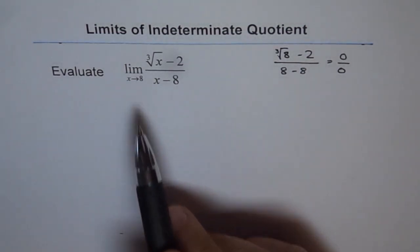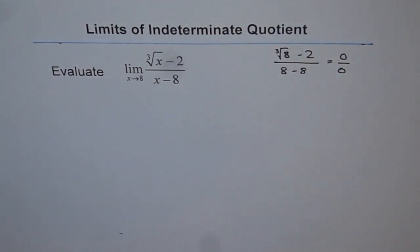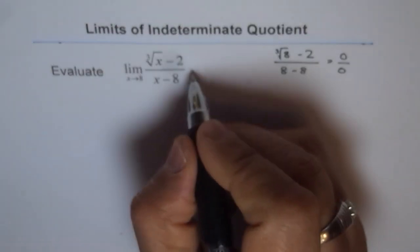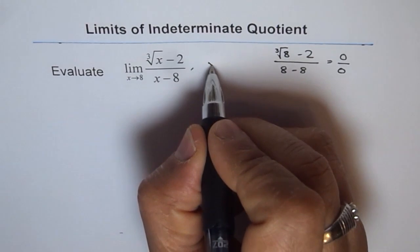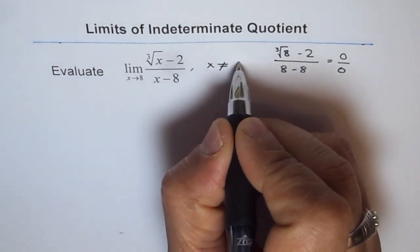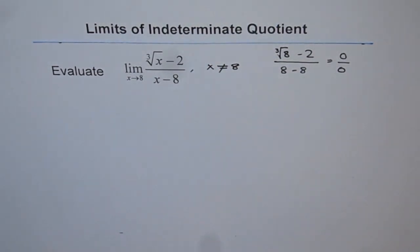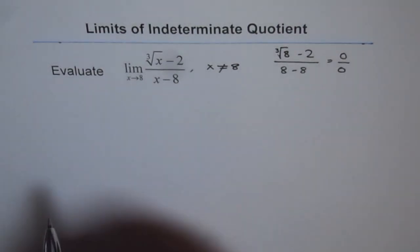When we put the limiting value and we get 0 over 0, that means it's a meaningless thing. It means x cannot be equal to 8. So the function is not defined at the limiting point.